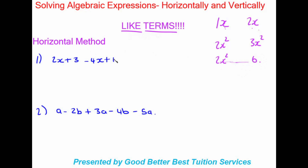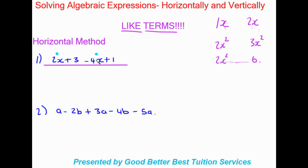Looking at the first example using the horizontal method, expressions are written out and solved left to right. The first thing we do is find the like terms. We identify them by shapes or colors. I have 2x here, so I'll mark it blue, and I can see there's also a negative 4x — structured the same as 2x — so that is the like term, marked with the same color.